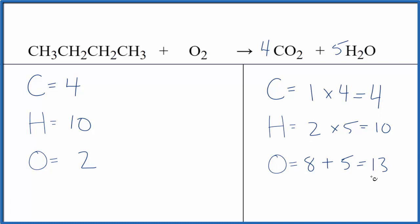So now we have a problem. We have 13 oxygens and 2 here. So how do we balance that and not mess everything else up? The way to think of this is 2 times some number is going to equal 13.